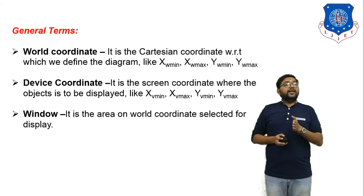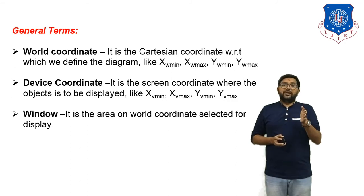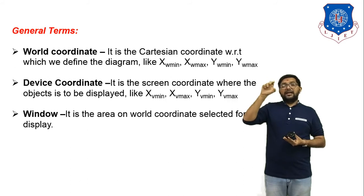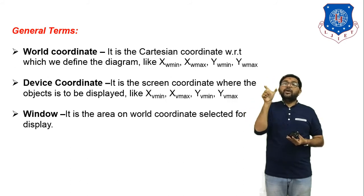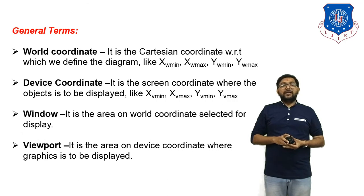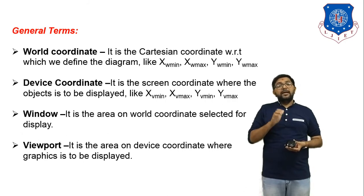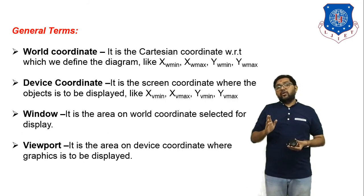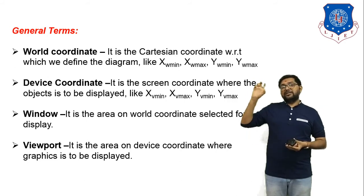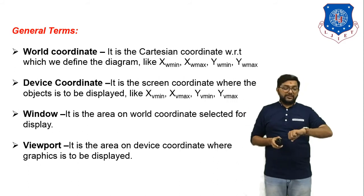Window is the area on the world coordinate selected for display — whatever area you select is considered the window. Viewport is the area on the device coordinate where the graphics is to be displayed; the selected portion is displayed on another screen, and that screen is considered the viewport.